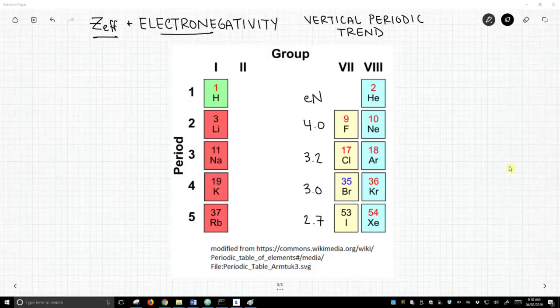On the screen, we have a small portion of a periodic table, groups 1 and really 7 and 8. Group 2 is sort of absent in this picture, and we've also listed the electronegativity of the elements. We're going to focus on group 7 right here.